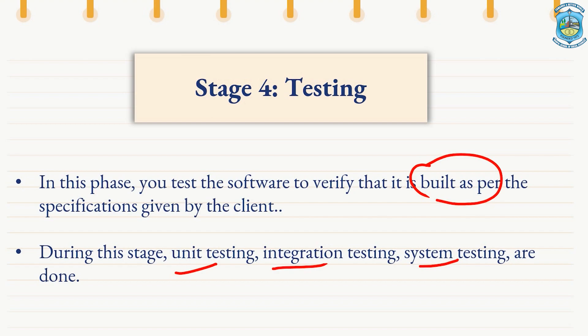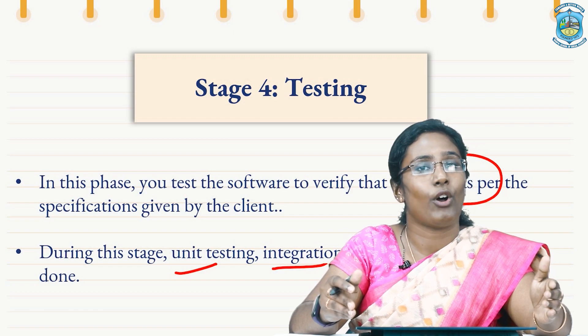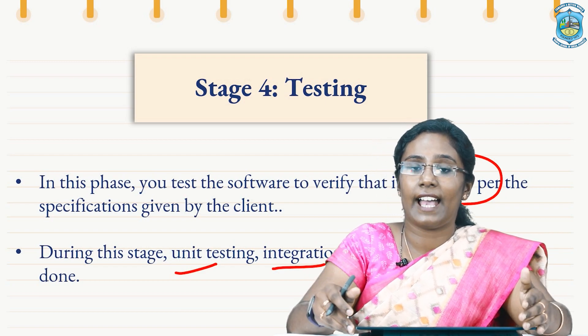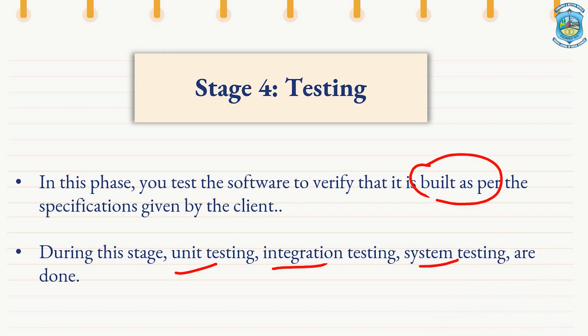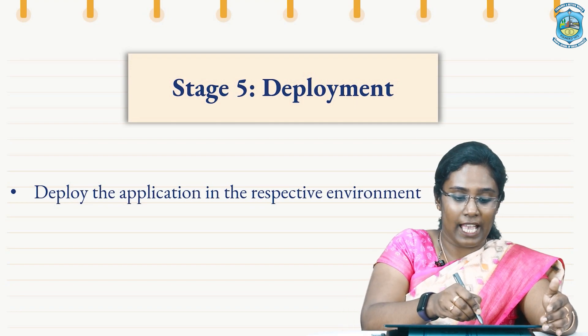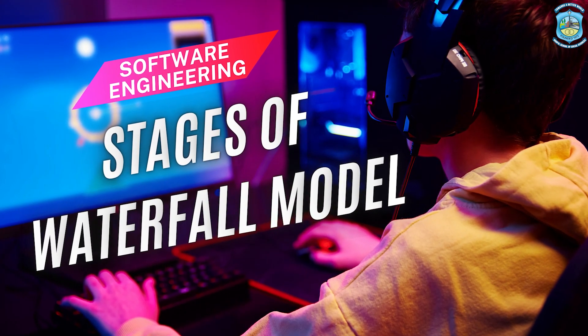Unit testing is a software testing type in which we focus on the smallest unit of the software design. Integration testing involves combining all the units or modules tested in the previous unit testing and checking whether they work as a combined entity. System testing checks whether the software works fine with different operating systems. The next phase of waterfall model is the deployment phase, where the deployment of the application in the respective environment takes place at the client site.